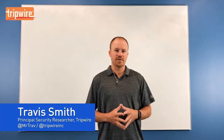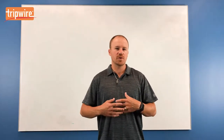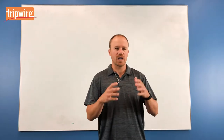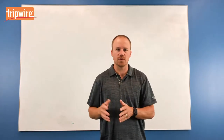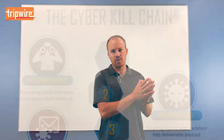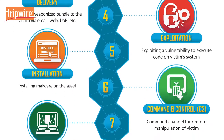In the ATT&CK framework there are over 200 different techniques, and some of them map across different tactics. One approach an organization might take is adopting it tactic by tactic, column by column — focusing on initial access, persistence, and so on. However, unlike the Lockheed Martin cyber kill chain where an adversary moves linearly from reconnaissance through to action on objectives, attackers using ATT&CK don't follow that order. They might start with execution, move to persistence, then lateral movement, then exfiltration — bouncing all around the matrix. So a column-by-column, tactic-by-tactic approach may not work well.